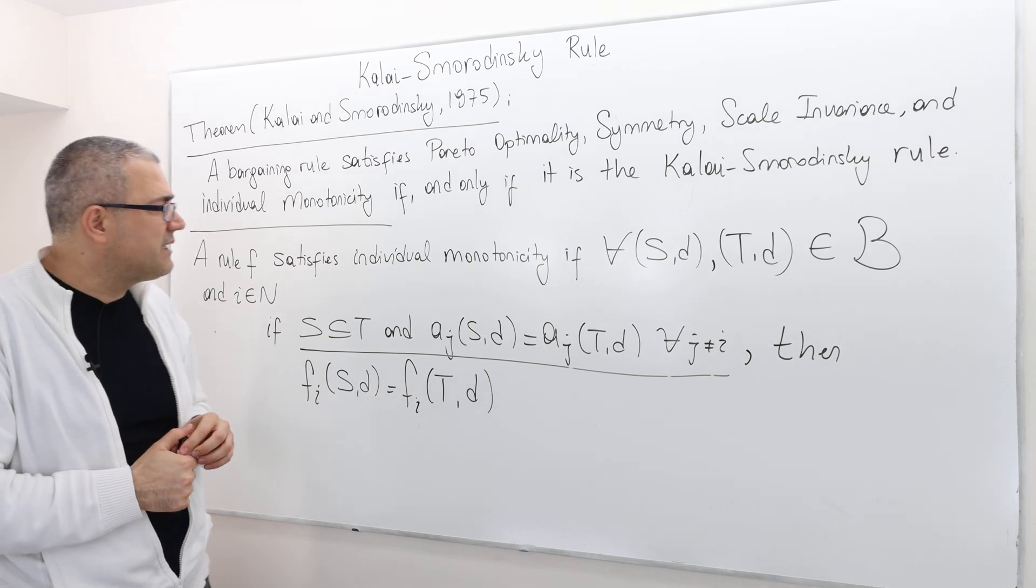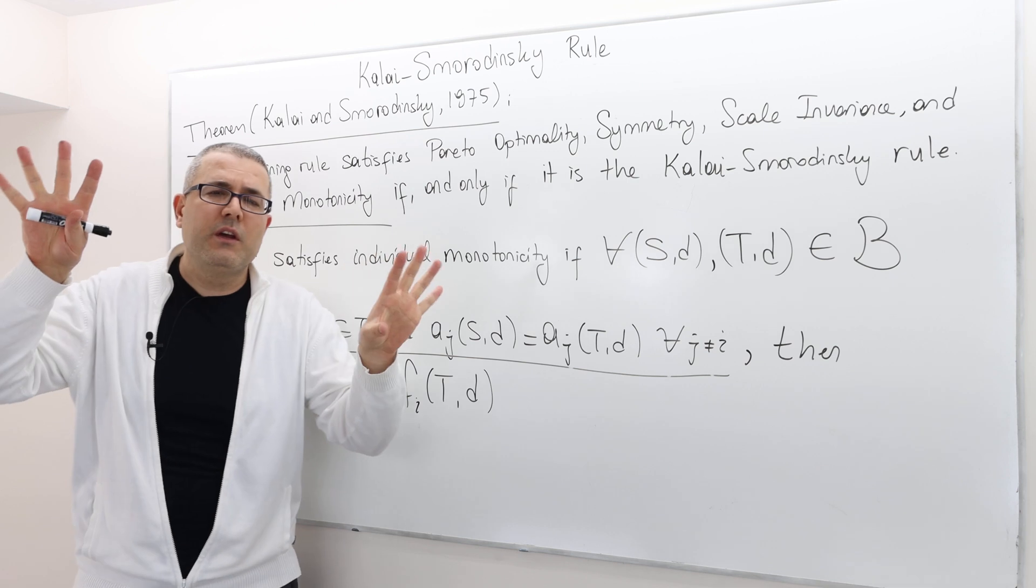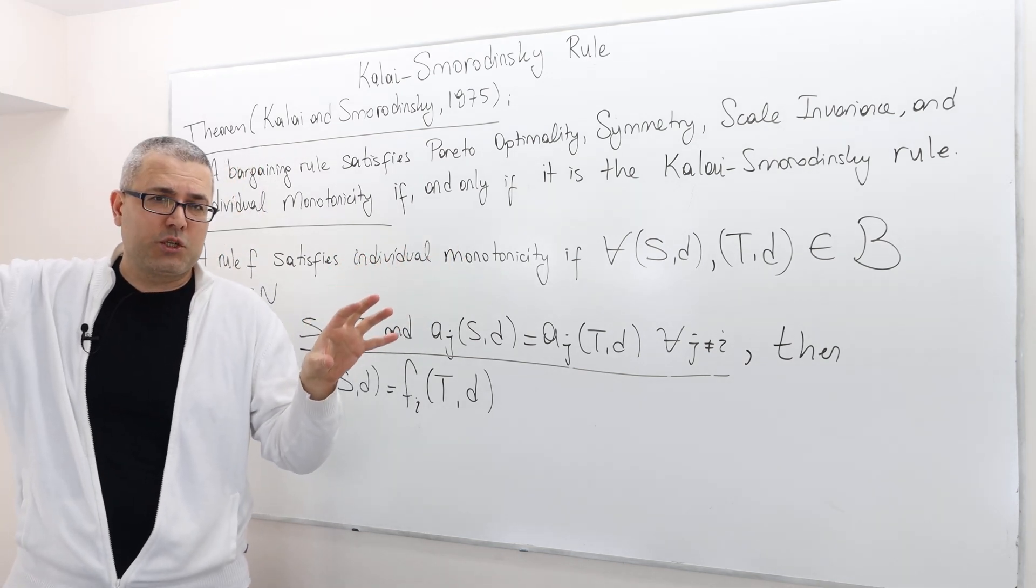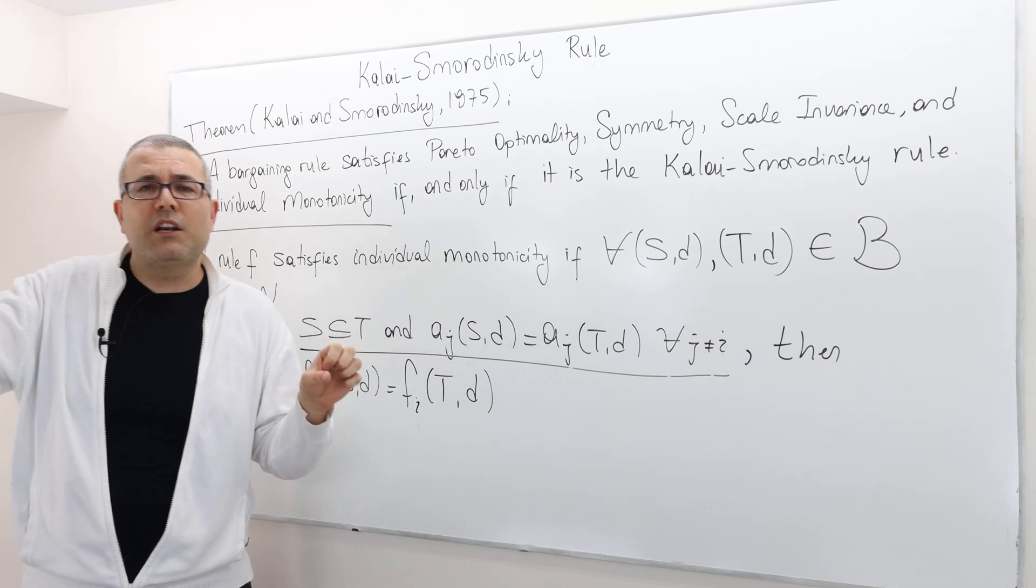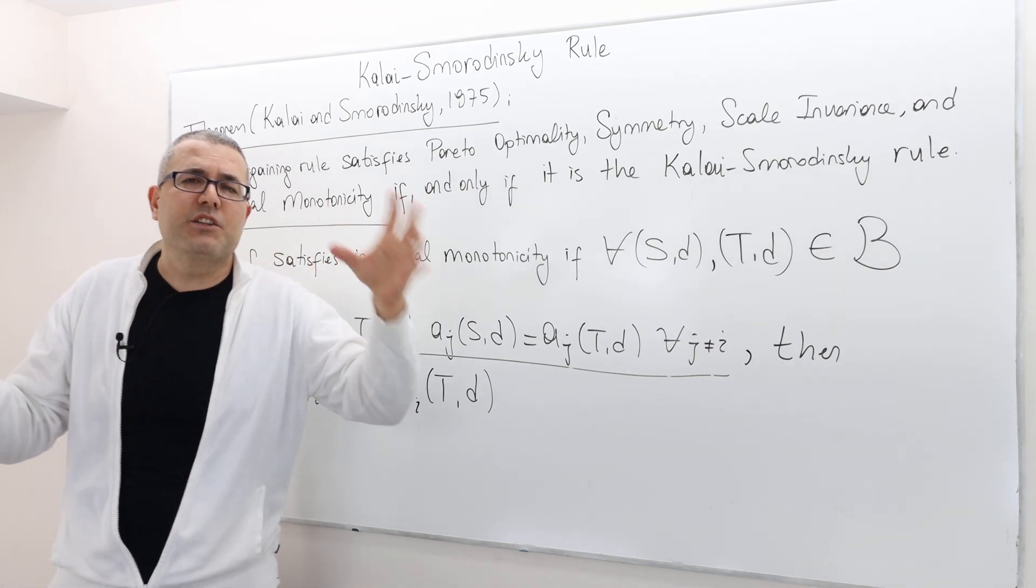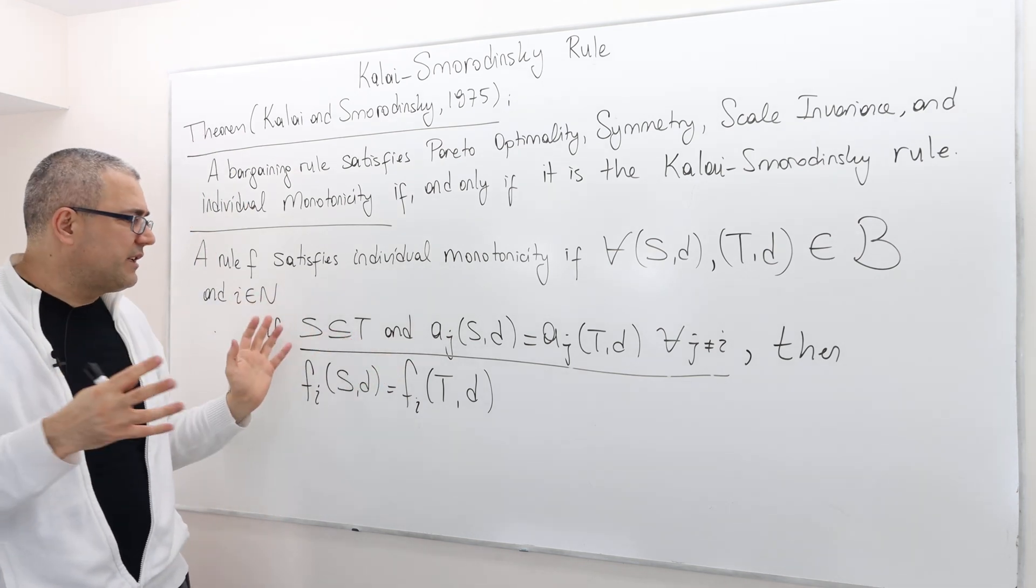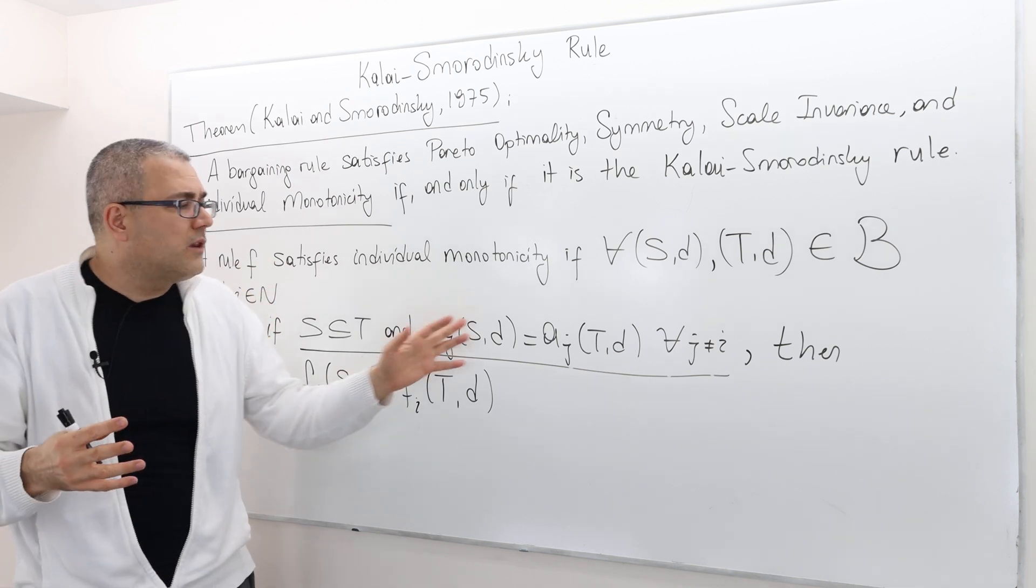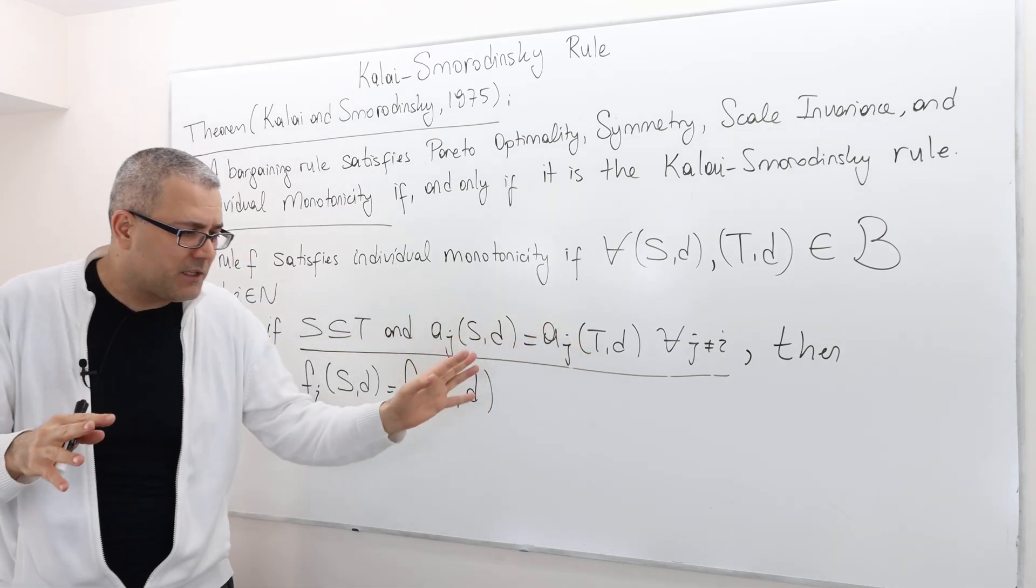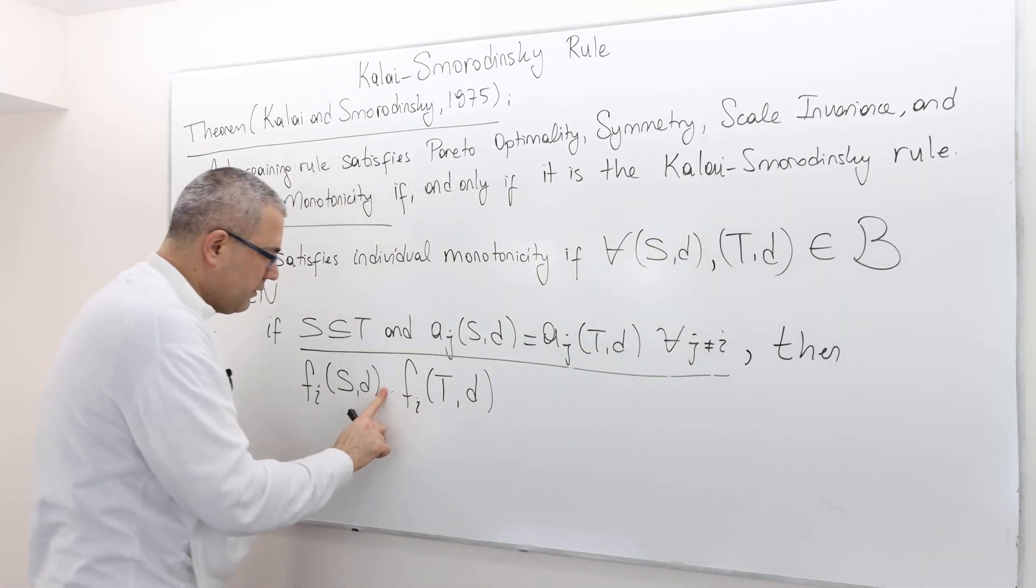So what does that say? Well, it says the following. Look, if I have two different bargaining problem S and T, T is a larger one. So the larger one should probably mean, you know, some players have a larger aspiration. Well, the thing is if T is larger than S, but all the players except player I has exactly the same aspiration. I'm sorry, this shouldn't be equal. This should be less than or equal.